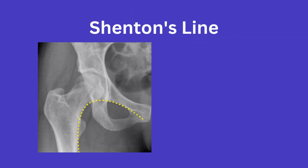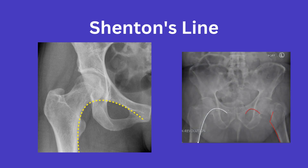Lastly, Shenton's line can be appreciated here and is drawn along the inferior border of the superior pubic ramus and along the inferior medial border of the femoral neck. This line is utilized to assess the continuity of normal anatomy within this region, as a disrupted Shenton's line can clue you into a fracture of the femoral neck, dysplasia, malrotation, etc.